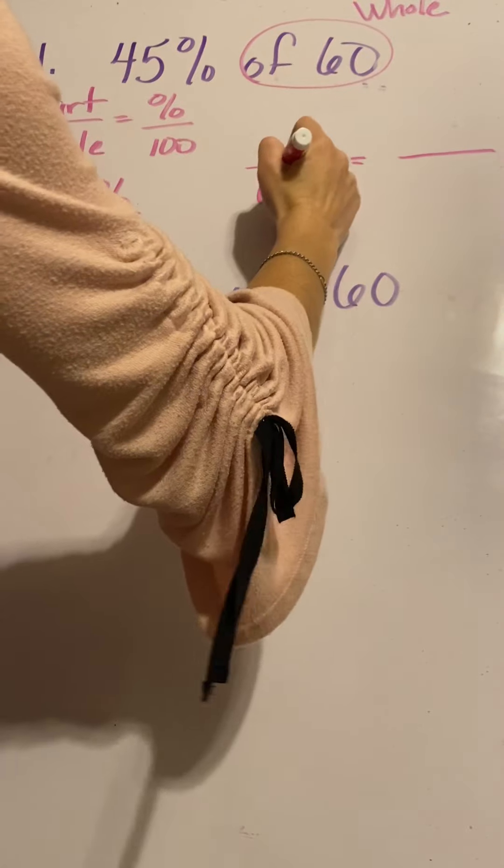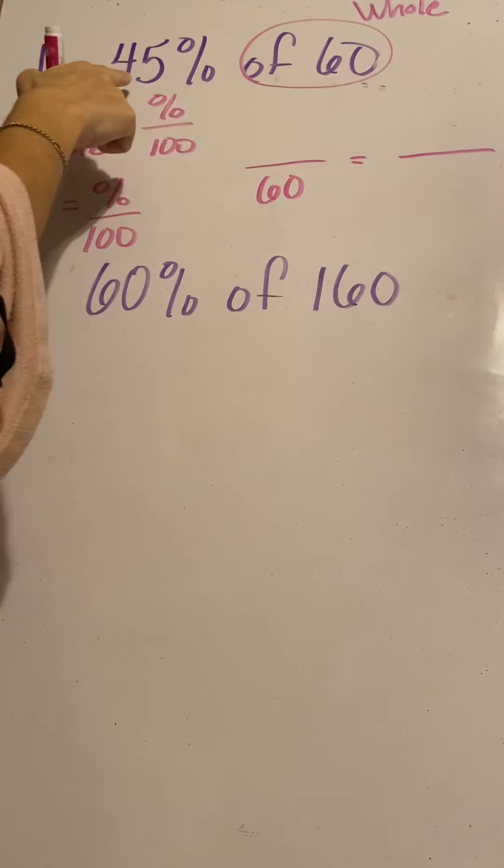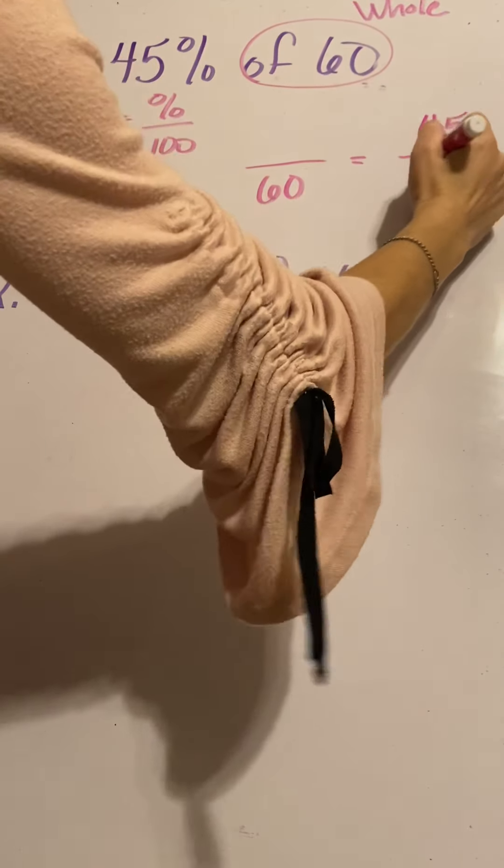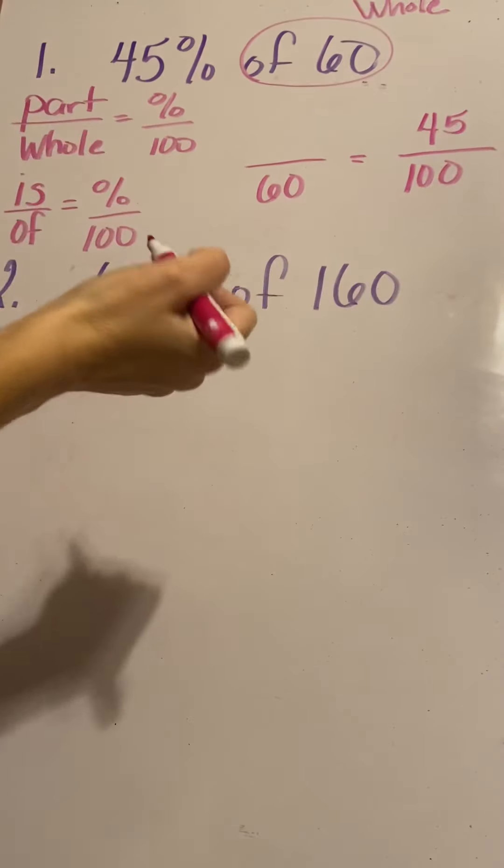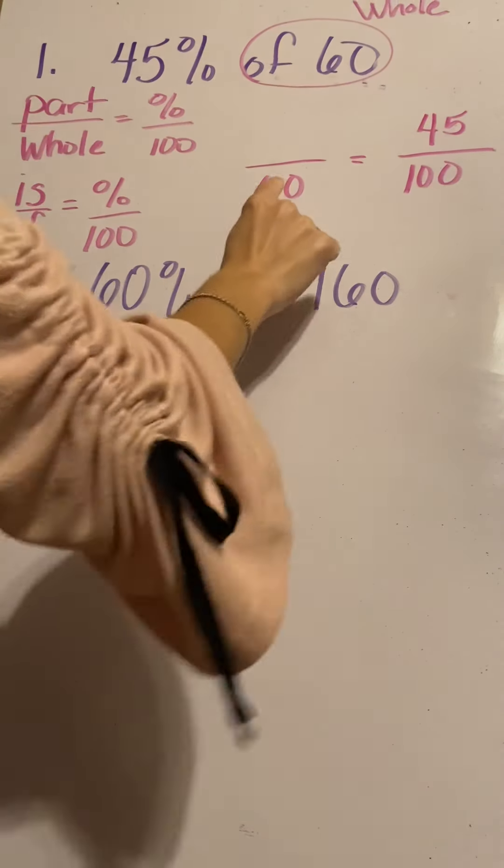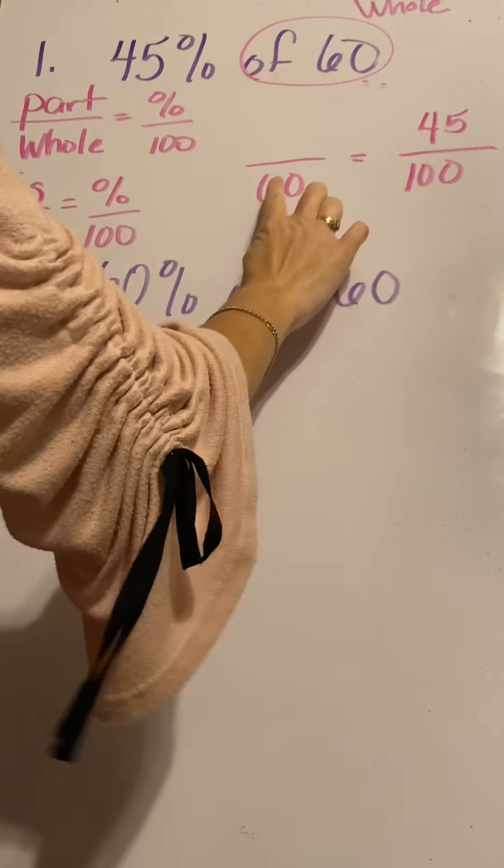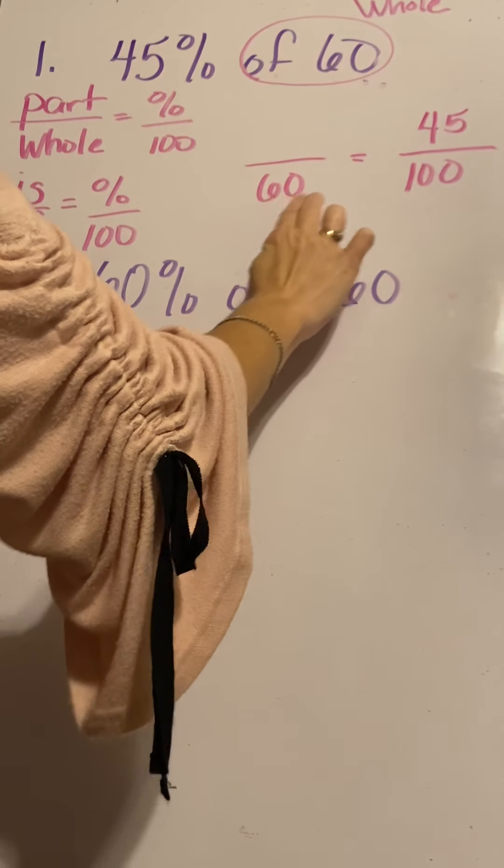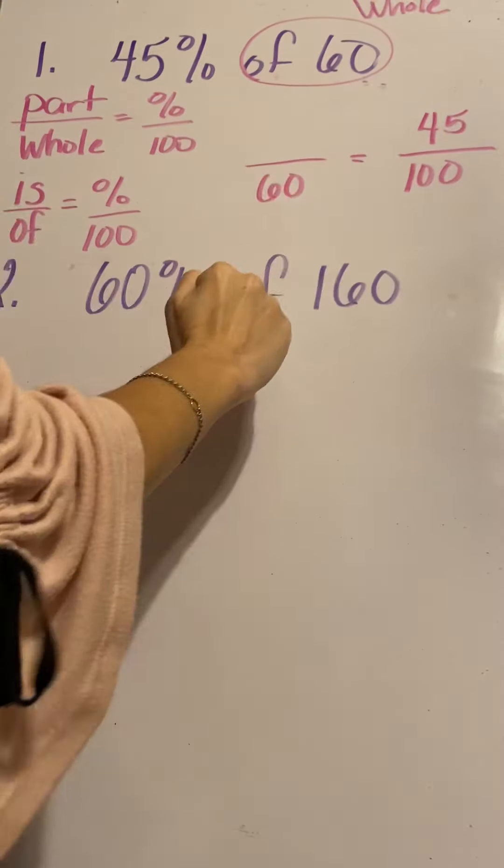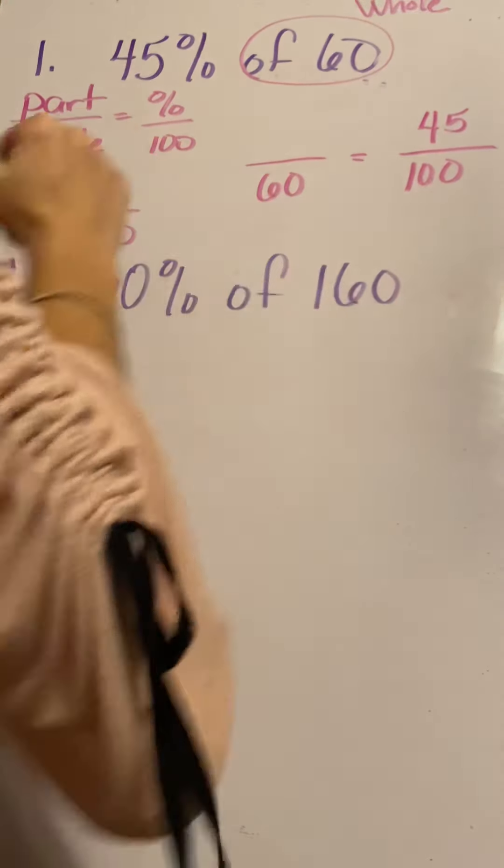We're going to put 60 on the bottom and then the 45%, that's your percent out of 100. So make that equal to 45 out of 100. I tell my students, look at what you know. We know the two bottom numbers. Look to see if there's anything like 60 times anything that will give you 100, but that doesn't work. There's nothing 60 times anything that will give you 100.